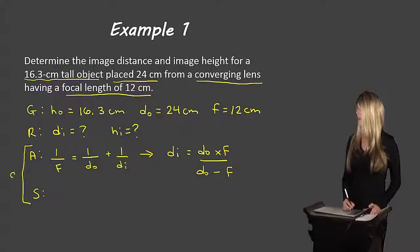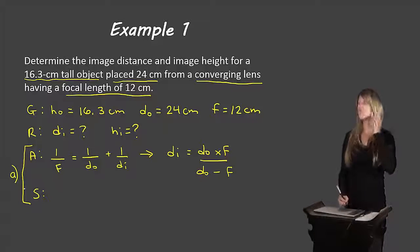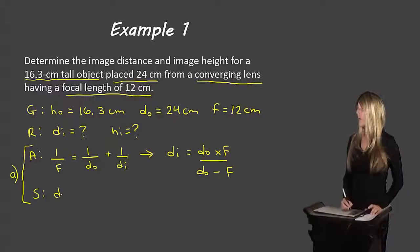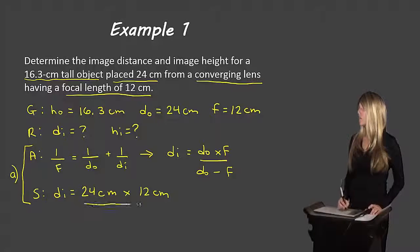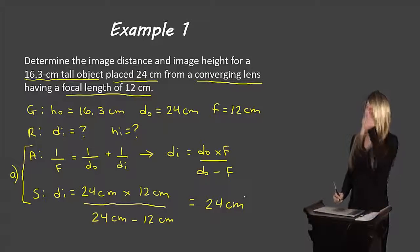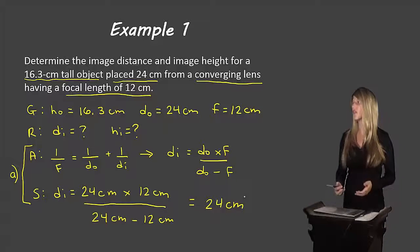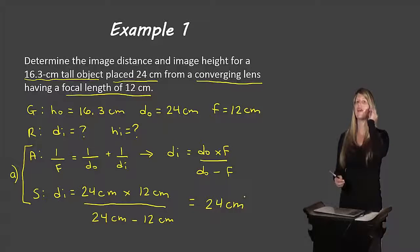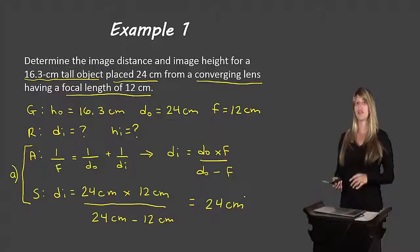Substituting and solving for Part A: DI = (24 cm × 12 cm) / (24 cm − 12 cm), which gives us DI = 24 centimeters. The image distance is 24 cm. It's a positive number, so we know we're dealing with a real image. Now let's calculate the height of the image — moving on to the next slide, but you have these numbers on your page to refer back to.